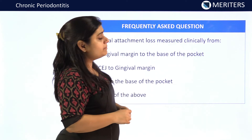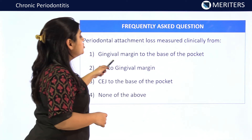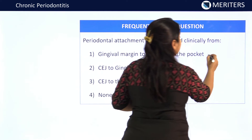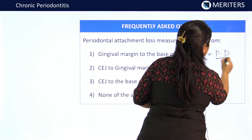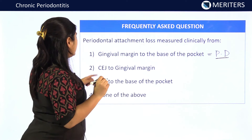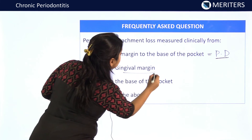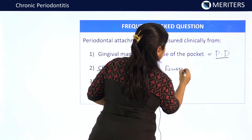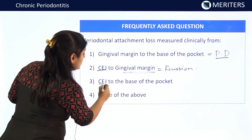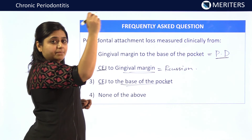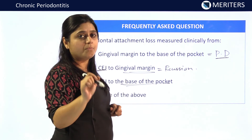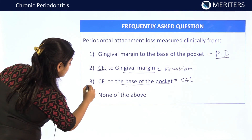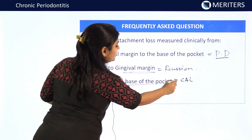The next question: periodontal attachment loss is measured clinically from which of the following? Option 1 — from the gingival margin to the base of the pocket — this is the pocket depth. Option 2 — from CEJ to the gingival margin — this is the recession. Option 3 — from CEJ to the base of the pocket — from the cemento-enamel junction up to the apical penetration of the periodontal probe, which is the clinical attachment loss. So the answer is option 3: from CEJ to the base of the pocket.